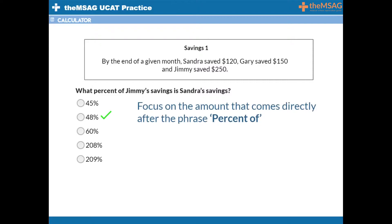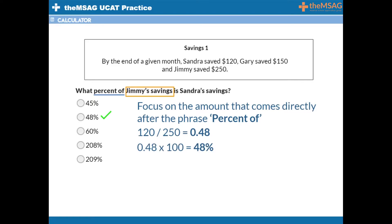To find one amount as a percentage of another, focus on the amount that comes directly after the phrase 'percent of' — that amount will be your divisor. Here, Jimmy's savings came after the phrase 'percent of', so we divide Sandra's savings by Jimmy's savings: 120 divided by 250 equals 0.48, or 48%. To convert a decimal into a percentage you multiply by 100, but this step is not necessary if you can translate decimals into percentages in your head.